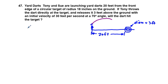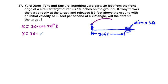We're going to go ahead and write the equation. x equals 30 times cosine of 70 degrees times T — this accounts for horizontal movement. For vertical movement, y equals 30 times sine of 70 degrees times T, plus 3 for 3 feet off the ground, minus 16T squared for gravity. This is our parametric equation for this problem.